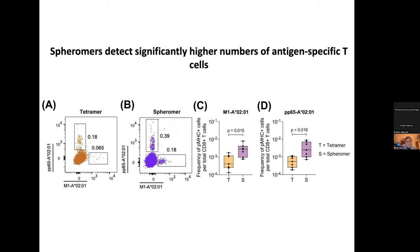Dextramers are more sensitive than tetramers, but they're also messier because they're polymers, and you have considerable background in many cases. But the spheromers we're talking about here, with the ferritin backbone, are discrete nanoparticles, so they have more uniform characteristics and give us not only greater sensitivity but also a cleaner profile. They label two or three times more cells. For instance, comparing flu specificity versus P5065 cytomegalovirus specificity — with the tetramer you get 0.18% of cells, but with the spheromer you get almost 0.4%. Similarly, with the flu tetramer, you get almost three times more cells with the spheromer reagent.